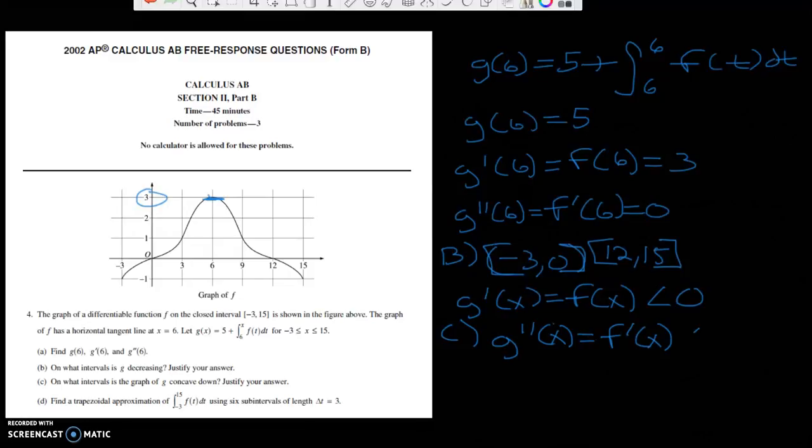So we're going to say g double prime of x is equal to f prime of x. And where is that going to be less than 0? And that's going to be less than 0 everywhere here from 6 to 15. I'm sorry, I couldn't really sketch that out all that well. Okay, so that's that part.